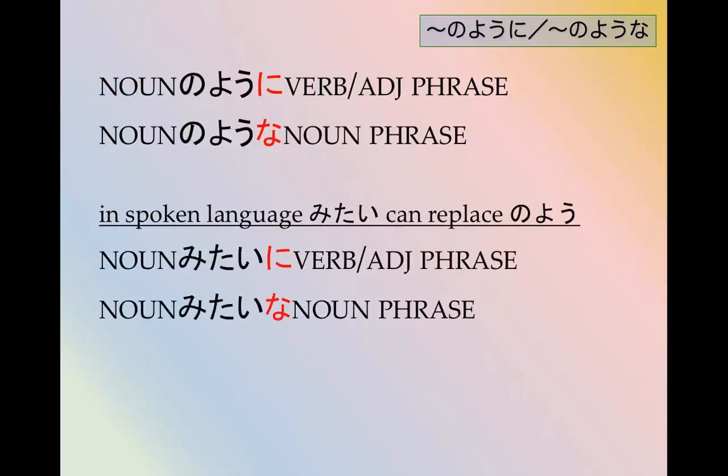In this lesson we study 何のように or 何のような, you can also substitute the 見たい, みたいに, みたいな. It's a little bit less formal, maybe a little bit more spoken. But they mean the same thing.